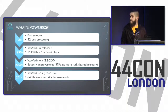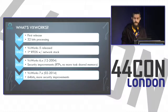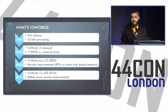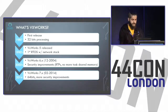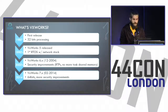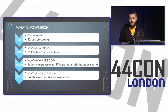VxWorks was first released in 1987 with 32-bit processing. Then in the 90s, VxWorks 5 was released — it was the first real-time OS with a network stack. At that time, no specific security features were implemented. Then in December 2004, VxWorks 6 came with security improvements: real-time processes and no more task shared memory, so every task is segregated.